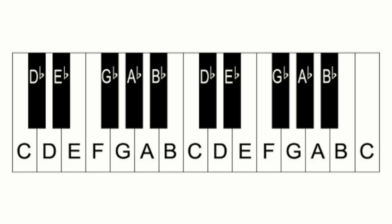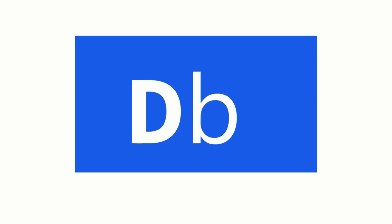Usually, a small letter B is used to represent the flat sign when typing or writing. For instance, instead of typing D flat like this, you can simply type this.